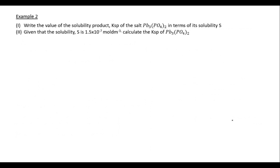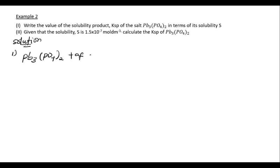Now let's look at example number two. Write the value of the solubility product KSP of the salt Pb₃(PO₄)₂ in terms of its solubility s, given that s equals 1.5 × 10⁻⁷ mol per dm³, and calculate the KSP. In aqueous solution, lead dissociates as Pb²⁺.